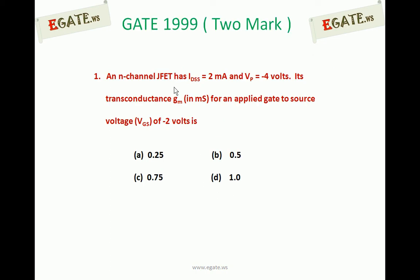The question is, it is first a two-mark question that came in 1999. An n-channel JFET has IDSS equal to 2 mA and VP is minus 4 volts. Its transconductance GM in millisiemens for an applied gate-to-source voltage of minus 2 volts is: